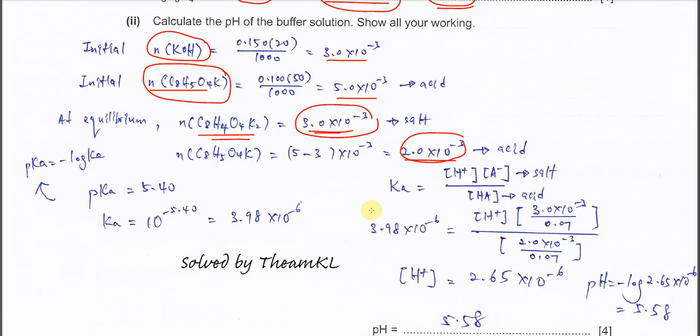Now we can calculate the pH. But before that, we have to get the Ka value from pKa. pKa equals negative log Ka, so we can get the Ka value. Ka is equal to 10 to the power of negative 5.4, so you get 3.98 times 10 to the power of negative 6. Substitute this Ka into this expression.